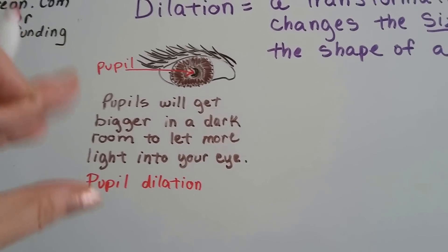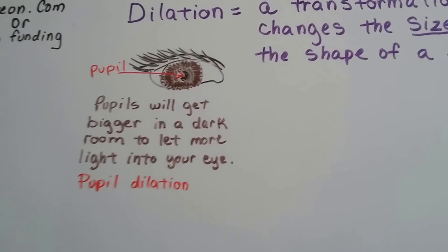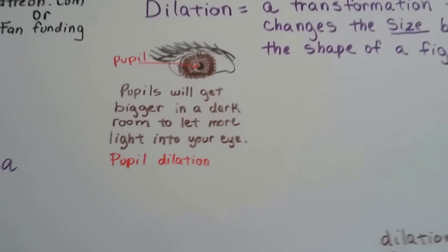It's opening and closing and getting bigger and smaller. The shape of your eye doesn't change. Just the pupil dilates.